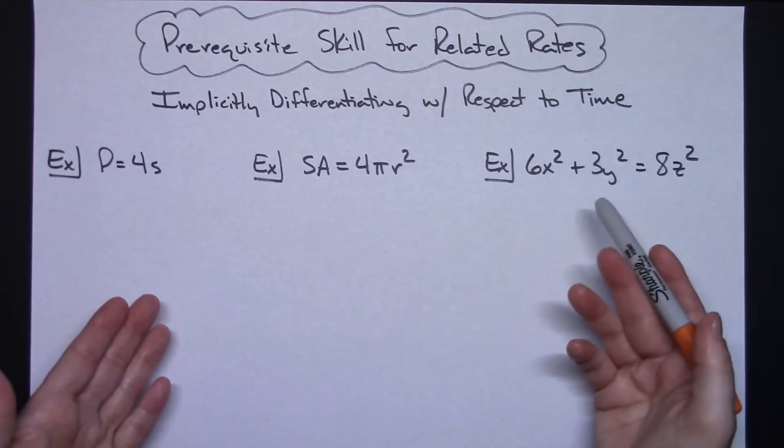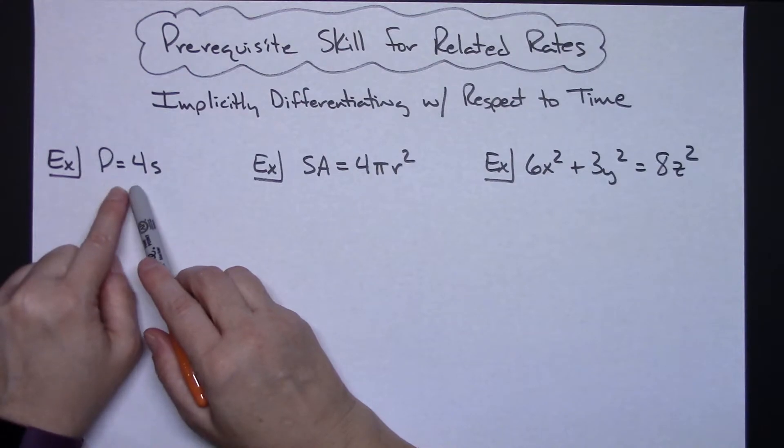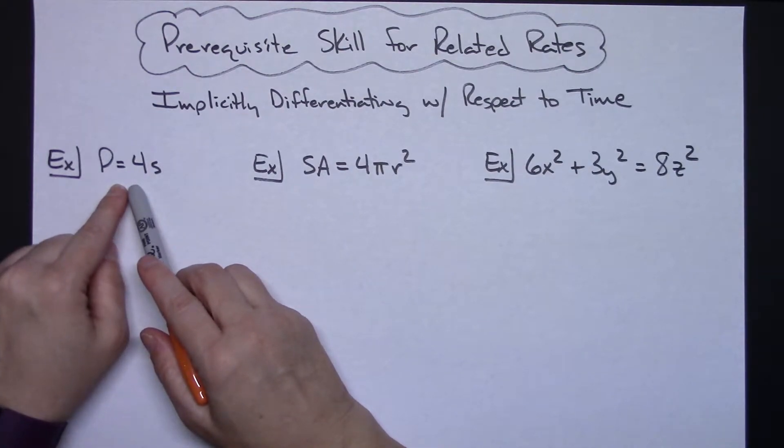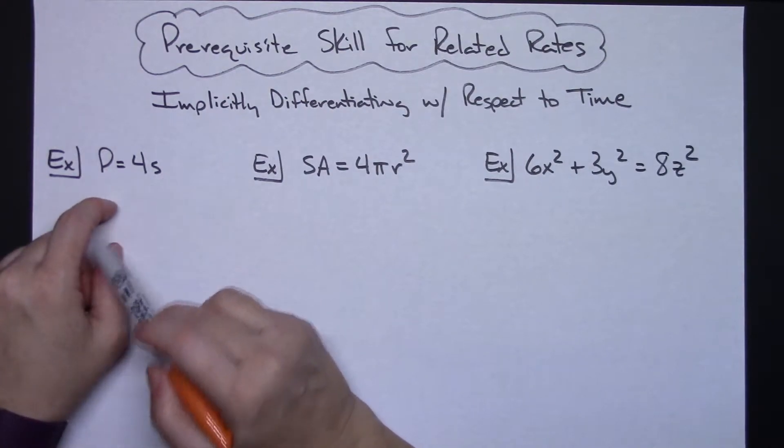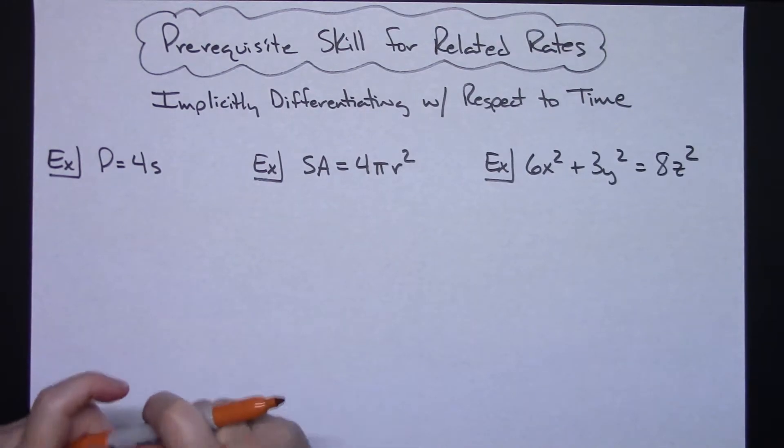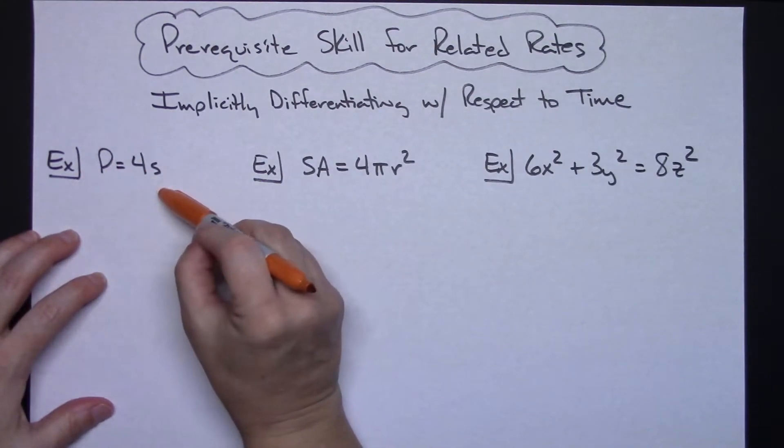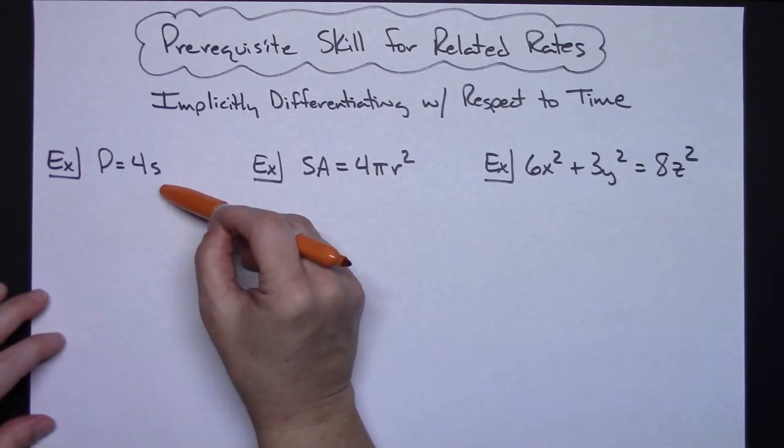Typically these are the types of equations that you will encounter in related rates problems. Like this one here we've got capital P equals 4s. Some of you are going to recognize that as being the perimeter equals four times the side. If I were going to differentiate this, I'm going to have to differentiate it using implicit differentiation and I want to do it with respect to time.